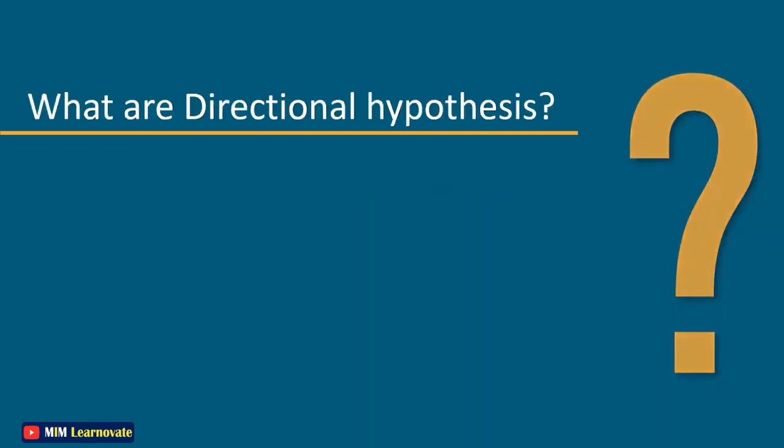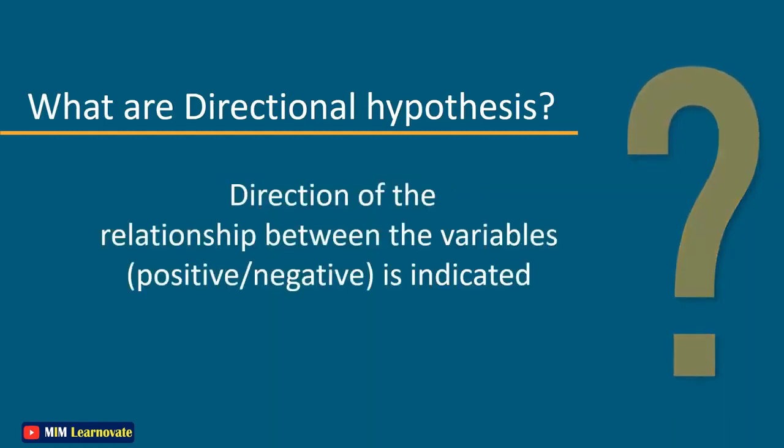What are directional hypotheses? Directional hypotheses are the type of hypothesis in which the direction of the relationship between the variables — positive or negative — is indicated.